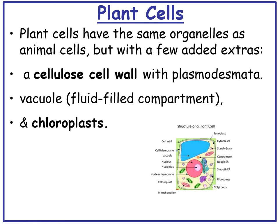Plant cells have the same organelles as animal cells, but they also have a few added extras. They have a cellulose cell wall with plasmodesmata in. They have a vacuole, also known as a tonoplast, which is a fluid-filled compartment usually filled with cell sap. And they also have chloroplasts, which are the site of photosynthesis.